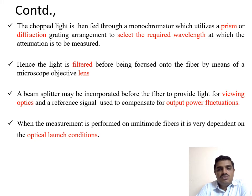The chopped light is fed through a monochromator, which utilizes a prism or diffraction grating arrangement to select the required wavelength at which attenuation is to be measured. The light is filtered before being focused onto the fiber by means of a microscope objective lens. A beam splitter may be incorporated before the fiber to provide light for viewing optics and a reference signal used to compensate for output power fluctuations. When measurement is performed on multimode fibers, it is very dependent on optical launch conditions.